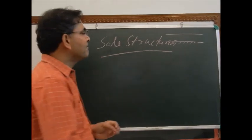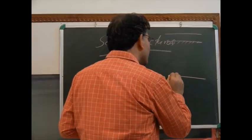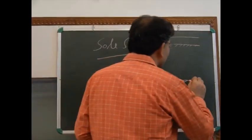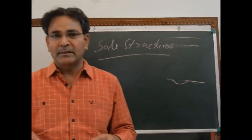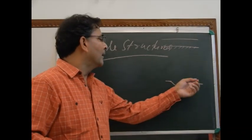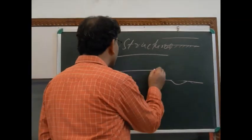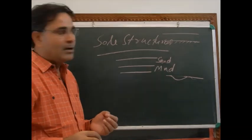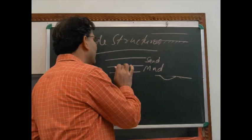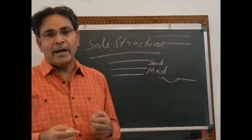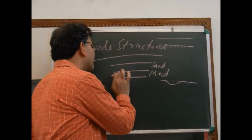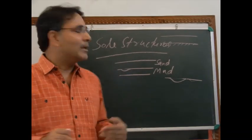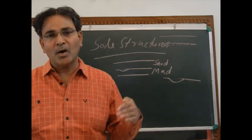Generally, sole structures are formed by the erosional action in soft sediments by the current, or they are formed by markings on the soft sediment by pebbles, by sticks, by objects in the soft sediment. There are basically two types of sediment: one is the soft sediment, that is the mud layer, and another is the sand layer, that is the overlying unit. The depressions are formed in the mud layer, the markings are formed, and when the overlying sand unit is deposited, it fills the gap. This filling is preserved on the bottom surface of the overlying sandy unit, and that is why they are known as sole structures.